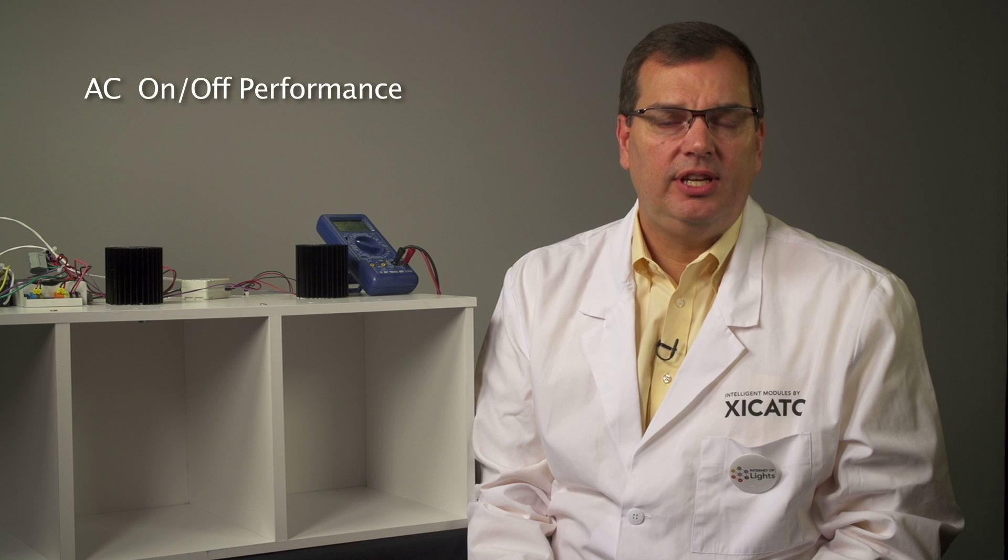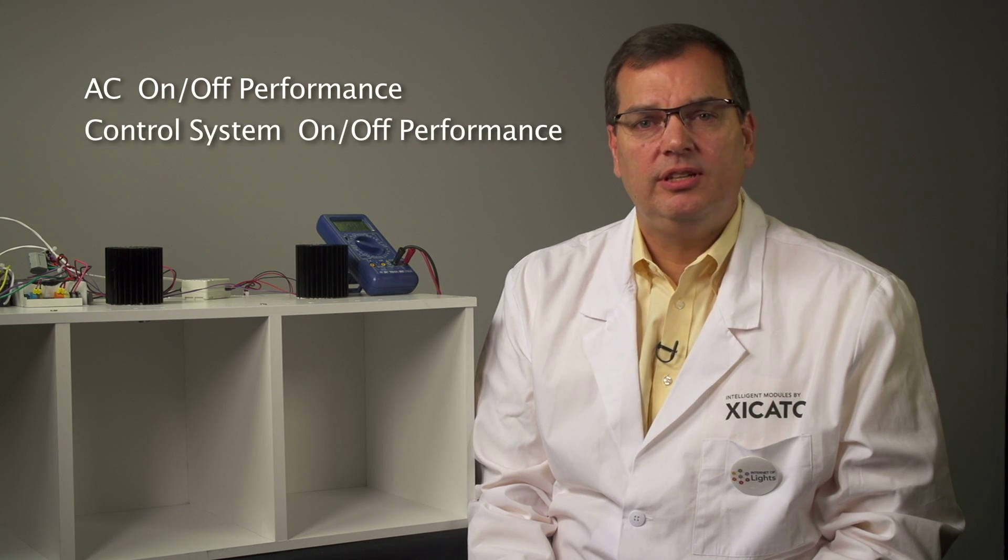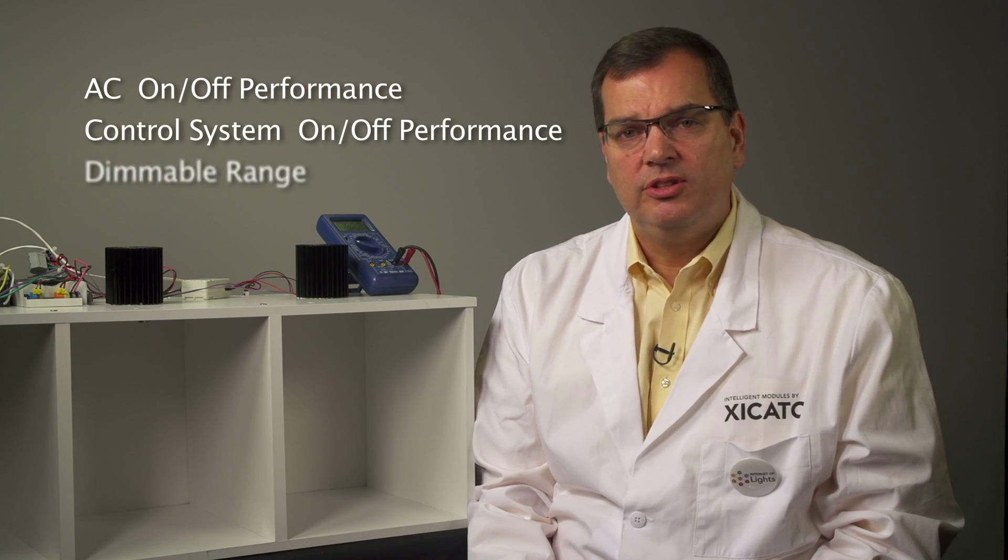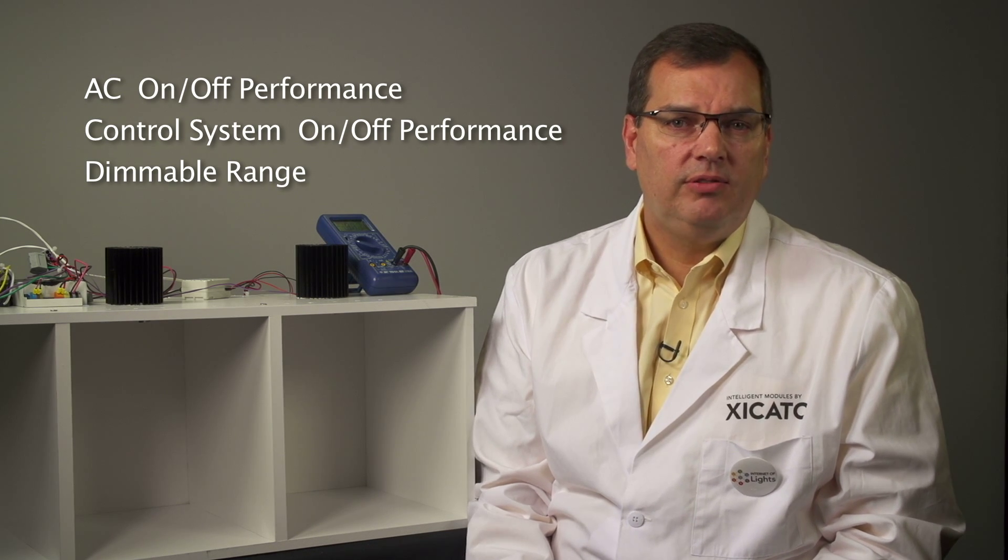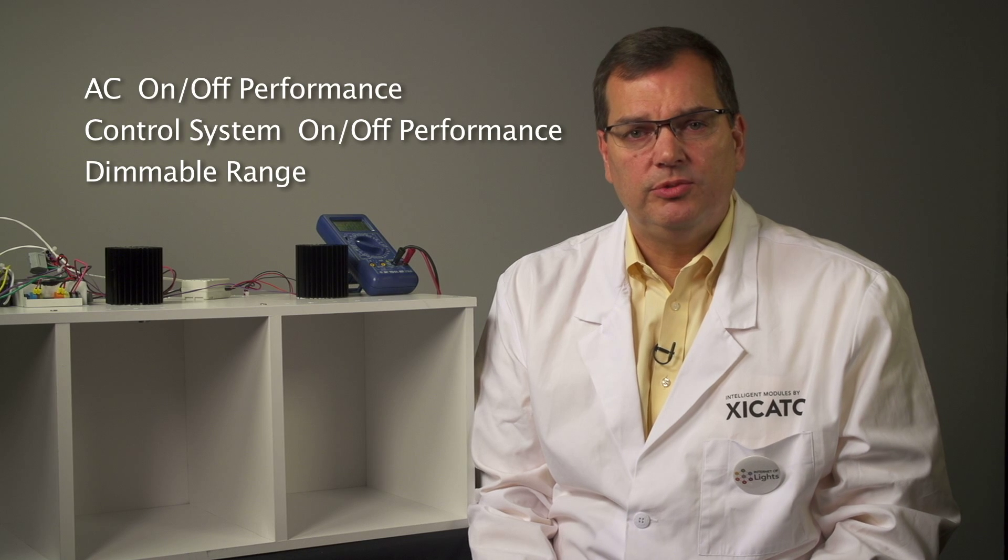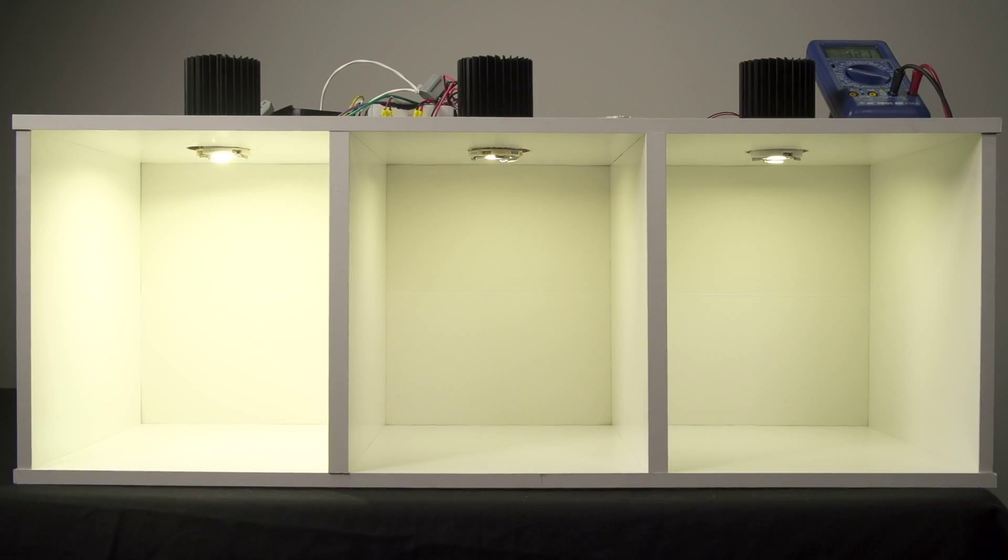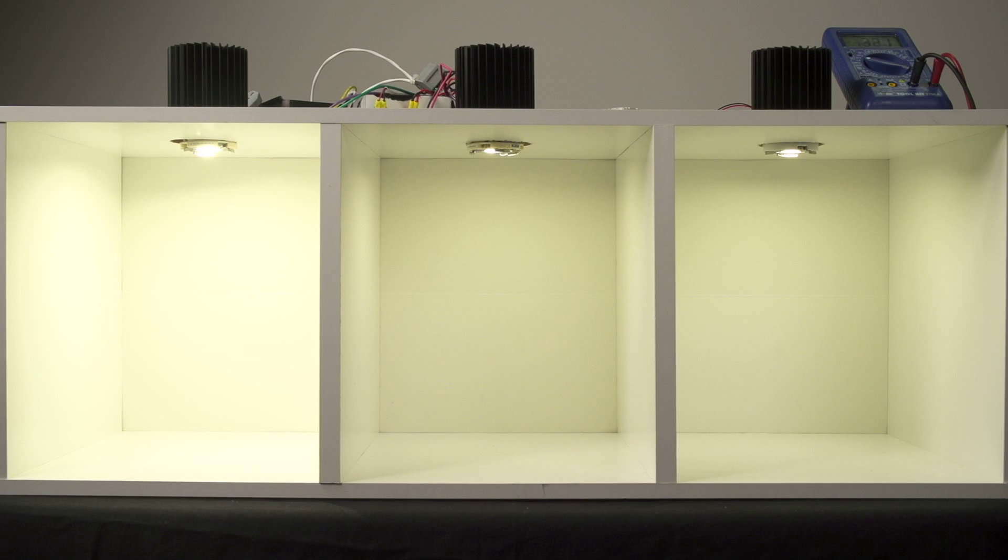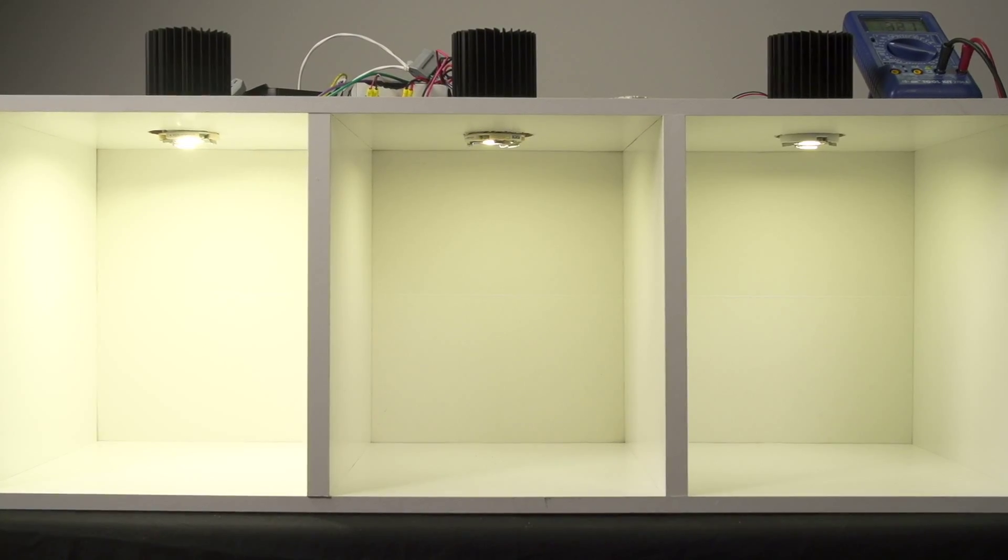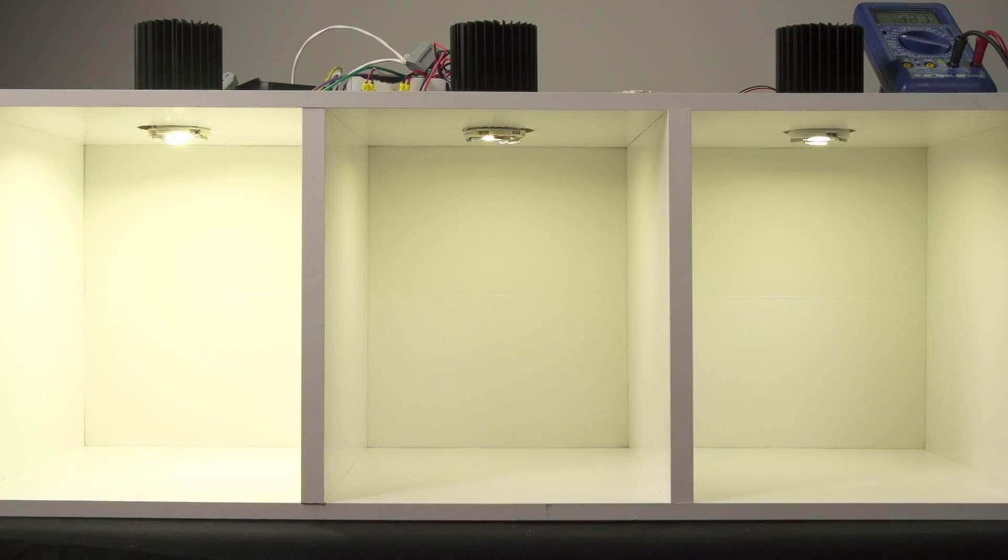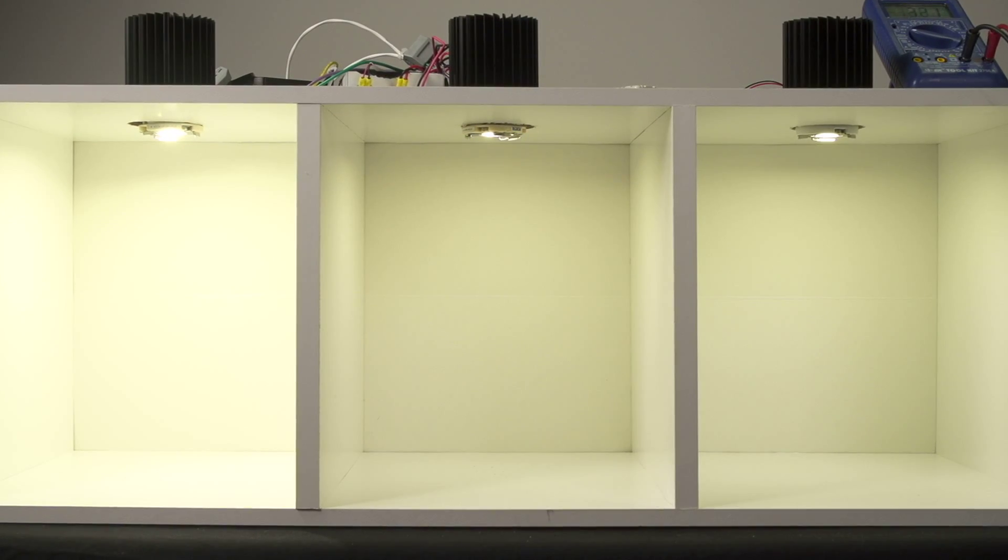So now you know three things to look for when evaluating LED dimming solutions. First is AC on-off performance, second is control system on-off performance, and the third is dimmable range both at the driver level and in terms of control system response. These are all important things when looking at LED dimming and being satisfied with your overall dimming solution. You don't have to settle for poor quality LED dimming. The solution is here with XIM.